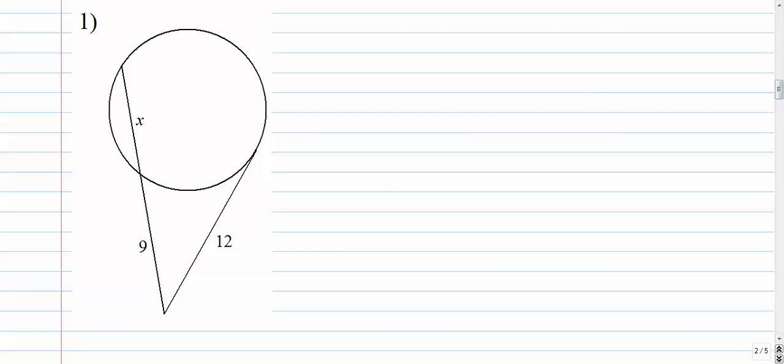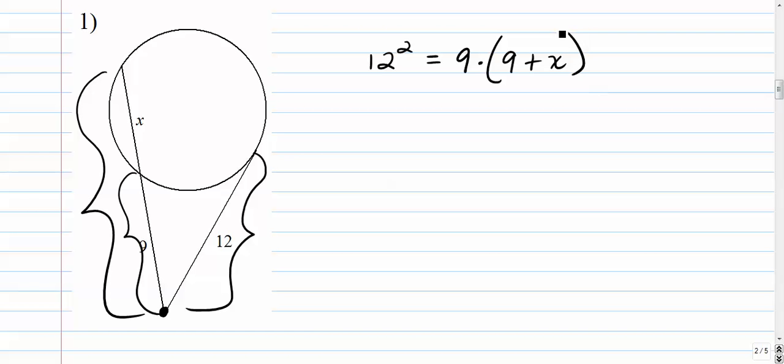Number one. We want to go and maybe put a dot there where the intersection is, and we want to say, okay, this is the tangent. We're going to square that. Set that equal to 9 times the whole thing. The whole thing is 9 plus x. Common mistake here is to say that that's 9 times x. It's not. It's 9 plus x. So this is 144.